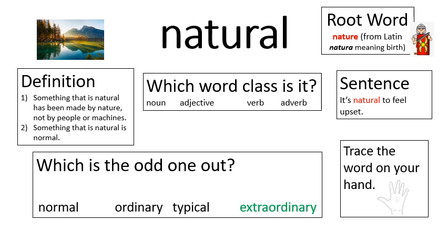It is an adjective — because if you're describing something as being natural, you're using a describing word. There are two definitions: something that is natural has been made by nature, not by people or machines; and something that is natural is normal. My sentence uses that second meaning: 'It's natural to feel upset.' The odd one out is 'extraordinary', because that's the opposite of normal and natural — that's out of the ordinary. The synonyms were normal, ordinary, and typical. Hopefully you've traced the word on your hand.